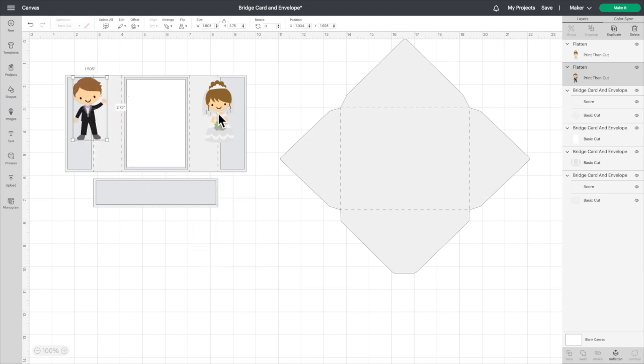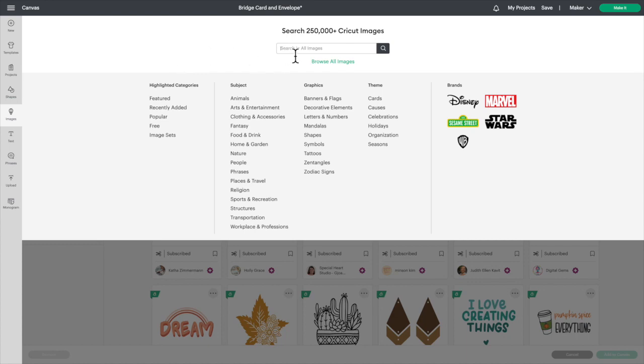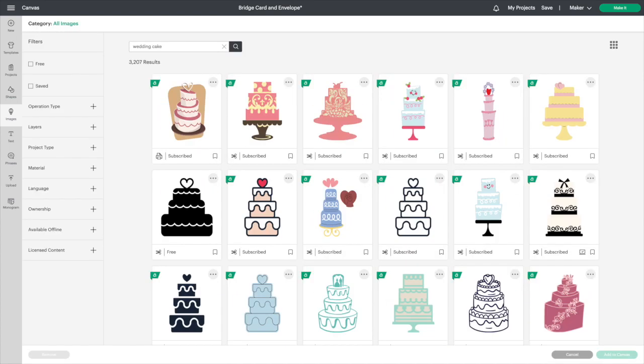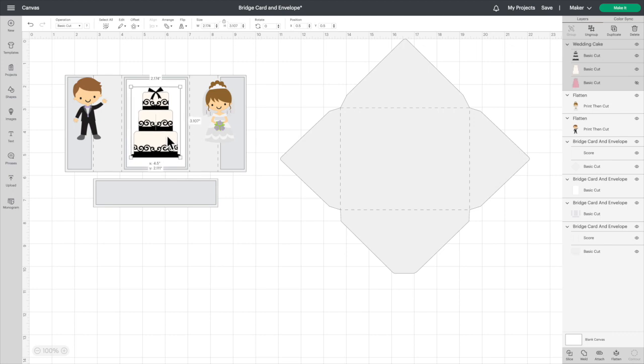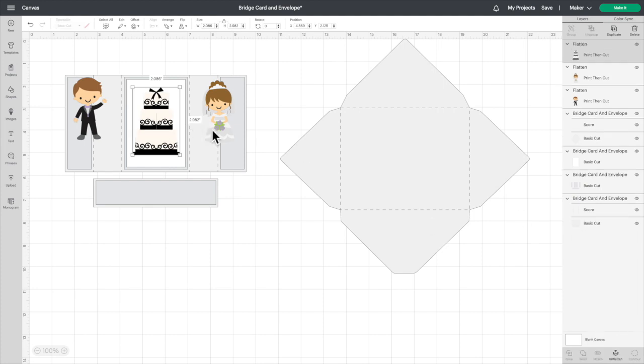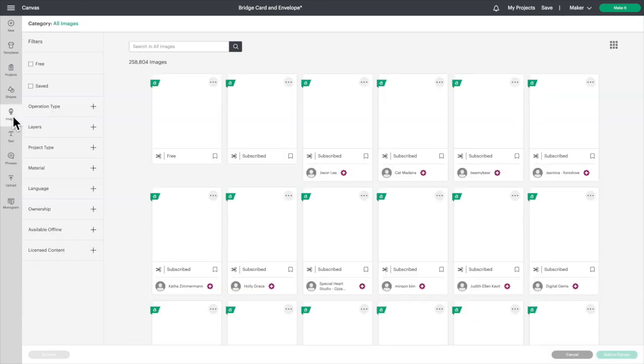There we've got our lovely couple there, so we need something for the center part there. I was thinking we could do a wedding cake, so I'm going to choose this one on the second row. It's pretty simple and I think it will look really nice. I like how that looks so I'm going to click flatten again. We're going to do print and cut, make this as easy as possible.